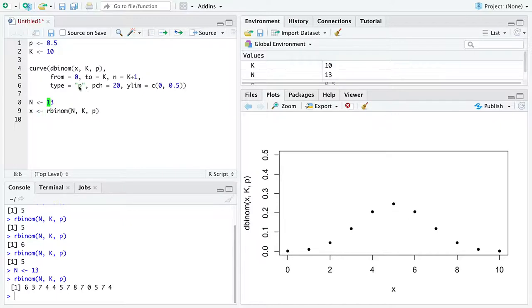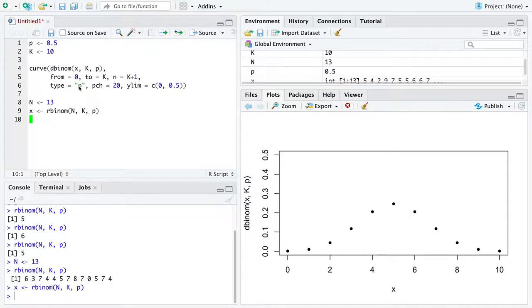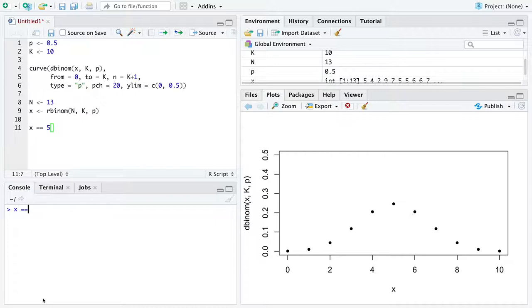Now what I'm going to do is take those 13 values, regenerate them, and store them into a vector named x. Then I'm going to lead with this new code here. x equals equals five. Equals equals in most programming languages is asking a question. So in this case, it's going, which values of x are equal to five?